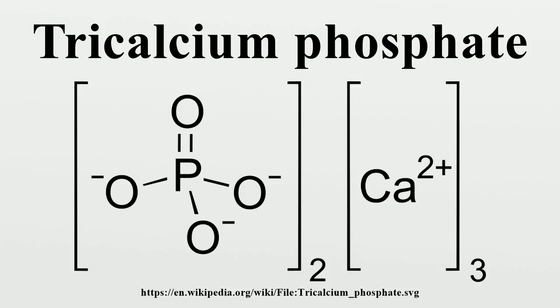It has three crystalline polymorphs: alpha, alpha-prime, and beta. The alpha and alpha-prime states are formed at high temperatures. As a rock, it is found in whitlockite.